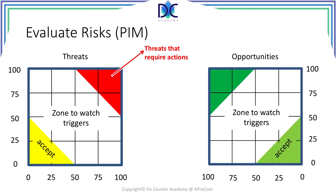We can look at the same thing for opportunities — the scales are the same. In the bottom right, we have the zone to accept: if those opportunities happen, we accept them and will not invest any money. The dark green zone is the high-level area — these are opportunities with a good chance of becoming real. Here we try to push the opportunities to the top left corner, toward 100-100. There is also a zone to watch triggers; when opportunities move closer to the dark green zone, we may consider implementing some measures.